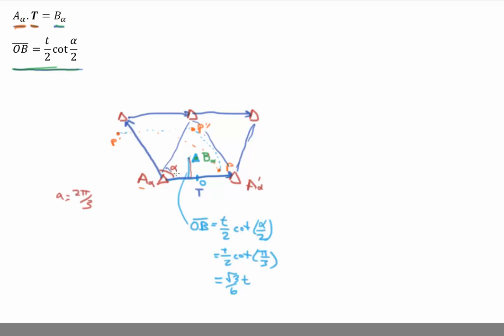Because this is a 60-degree angle, you can also draw a smaller triangle inside here. That's a 30, 60, 90-degree triangle. I know this particular distance here is t over 2. Since that's 30 degrees, this length here is going to be square root of 3 over 6 times t.